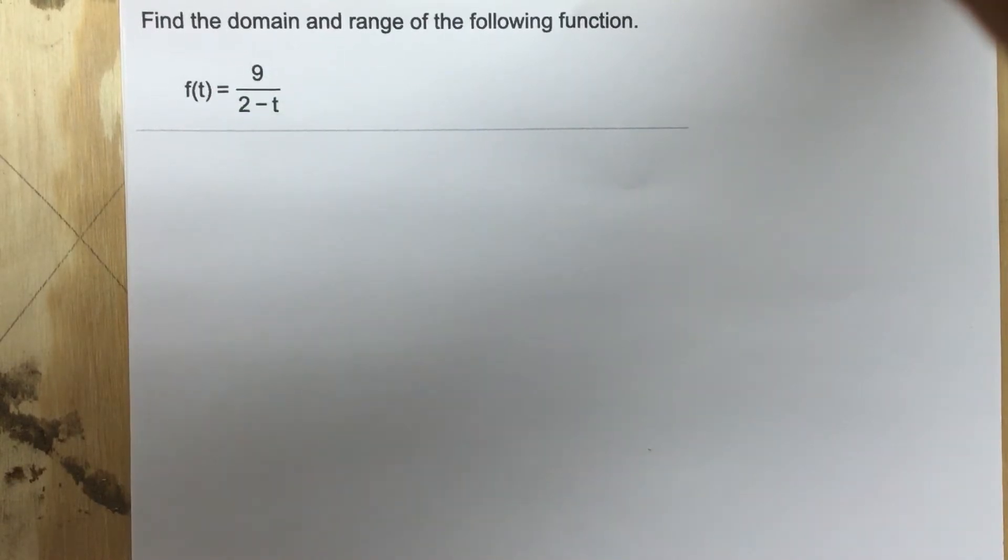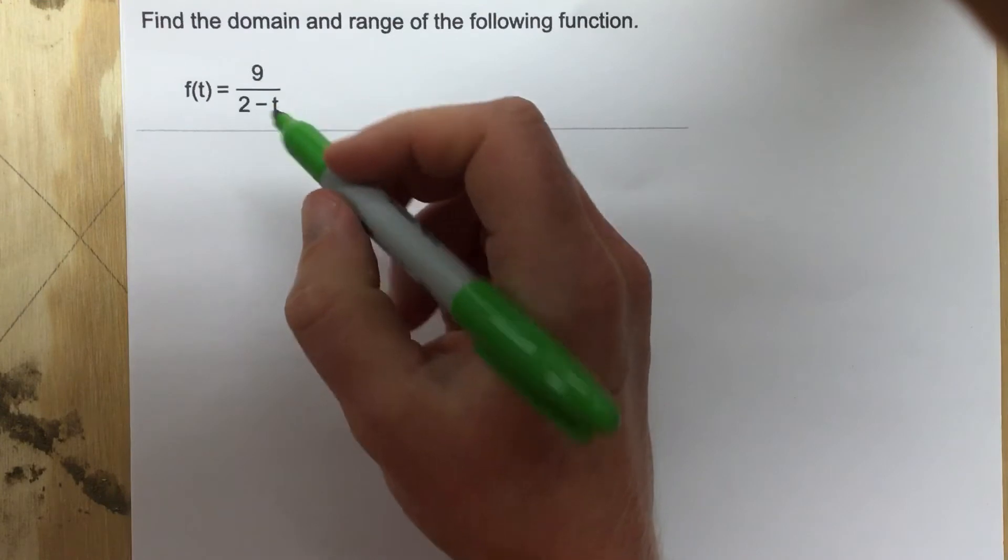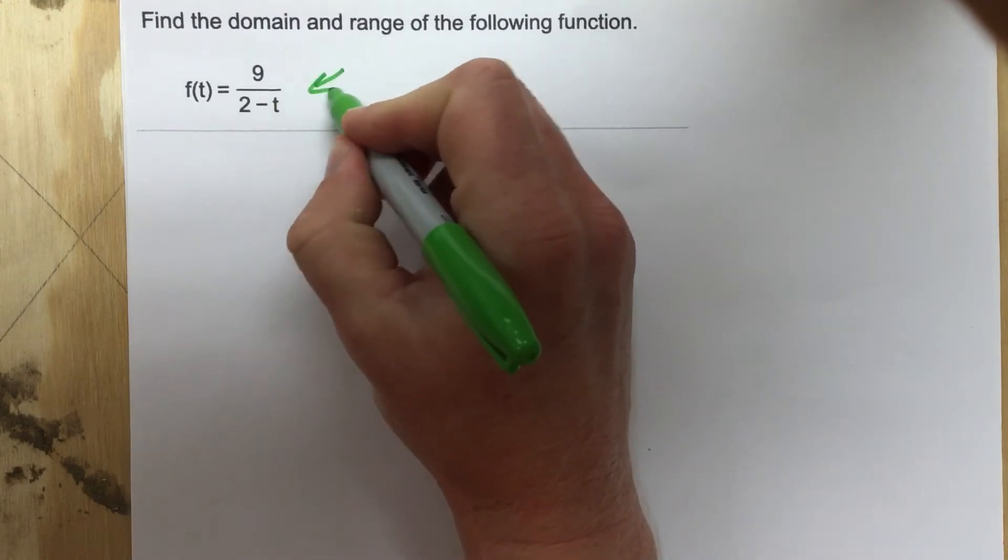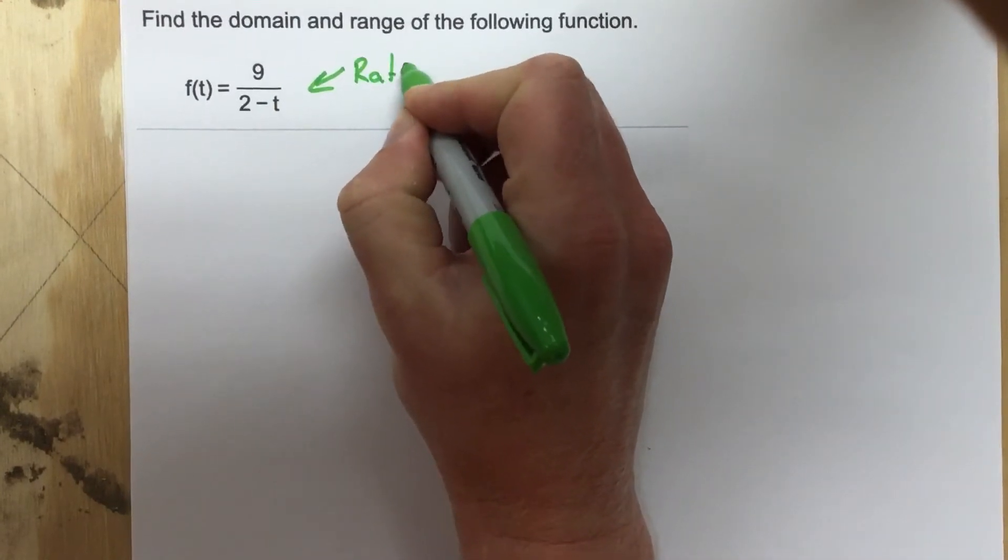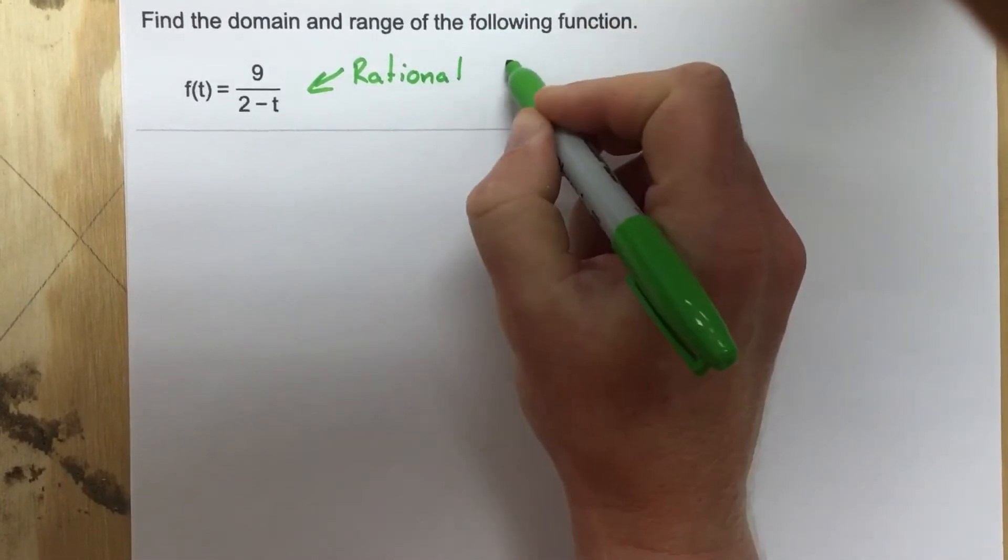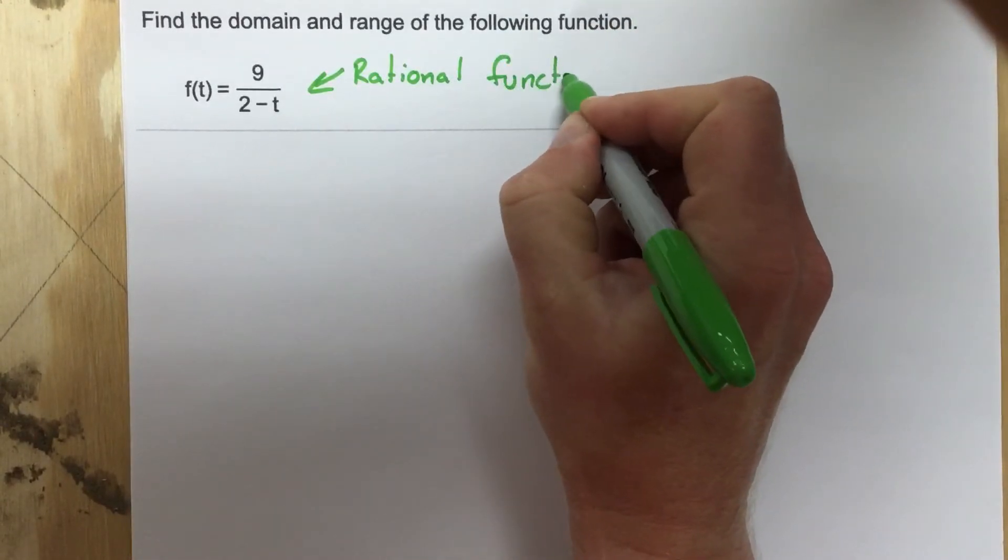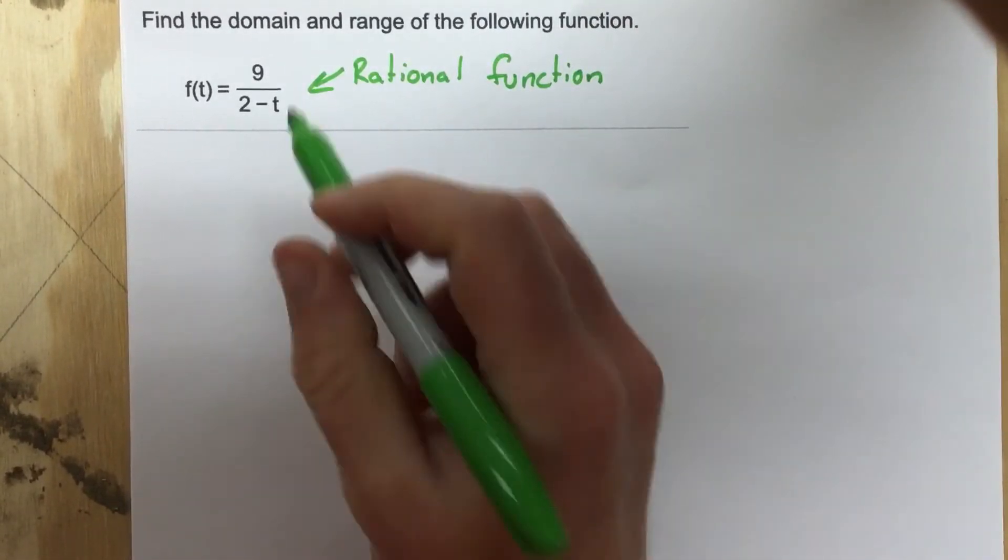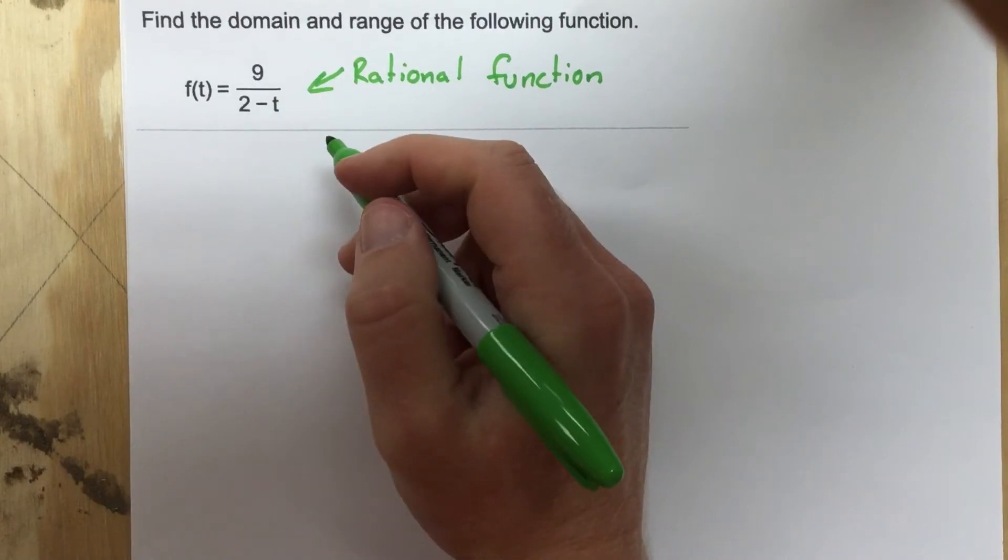So if we want to find the domain, this would be a rational function. It's always important to identify what kind of function you're working with. We have a fraction so that's a rational function.